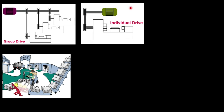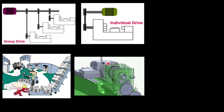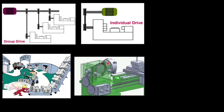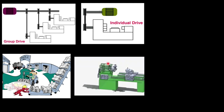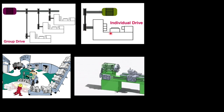Coming to the individual drive: one motor is connected to only one mechanism, and this is termed an individual drive. For any other mechanism, you will have another motor. Individual drives are found in lathe machines and spindle drilling machines. In a lathe machine, the motor rotates the spindle and moves the feed.